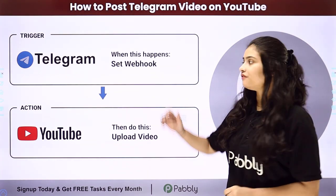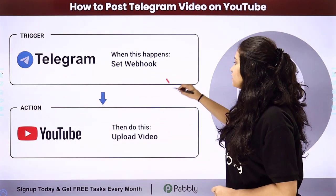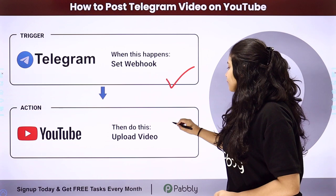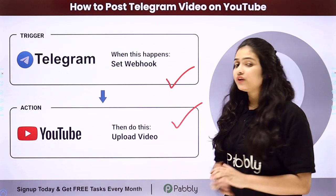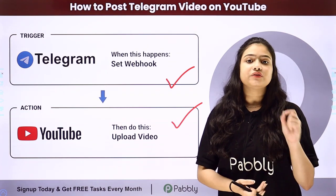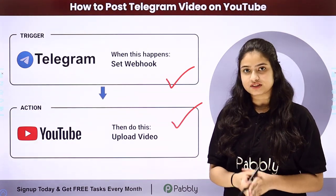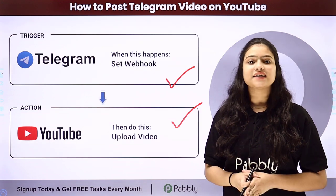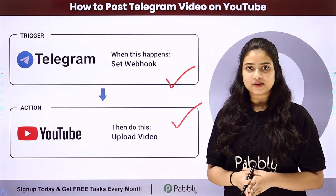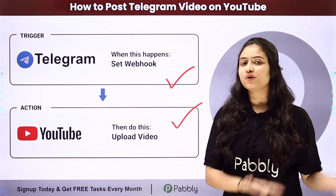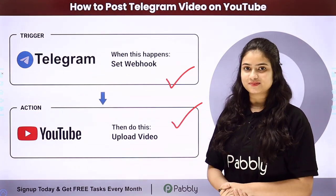Here we have Telegram in our trigger and YouTube in our action. We are going to connect both of them by using Pabbly Connect in order to automate this entire process. To learn this entire automation step by step, let me take you all to my screen.